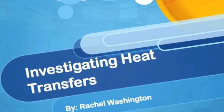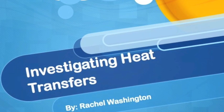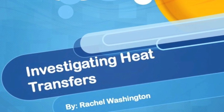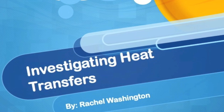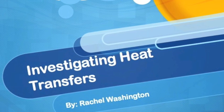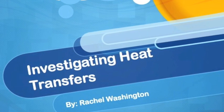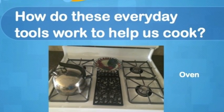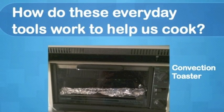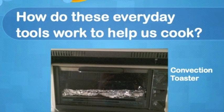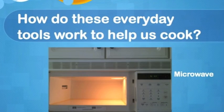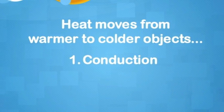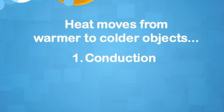Everything that has matter has heat. Heat is the movement of thermal energy, and you've already learned that heat moves from warmer matter to cooler matter. Today we're going to investigate three specific ways that it moves or transfers. Think about your stoves, toasters, and microwaves — we use all of these to cook our food, but have you ever wondered just how?